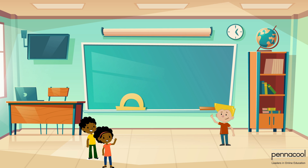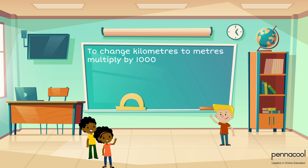Next, he converts kilometers to meters. The Queen's Park Savannah is about 3 kilometers in length. Representing this in meters, we must multiply by 1,000. This gives us a length of 3,000 meters.